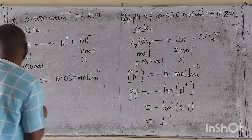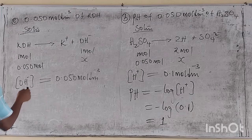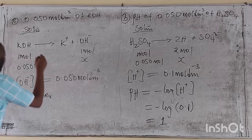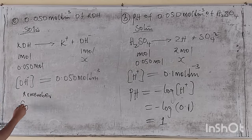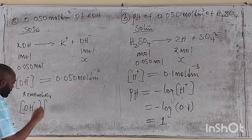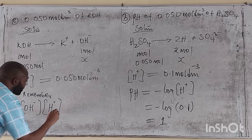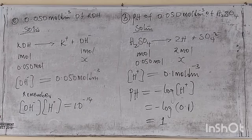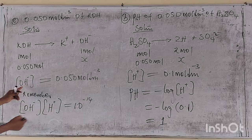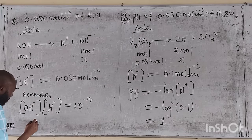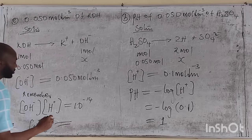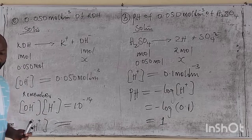So this is the hydroxide ion concentration. Now remember that the product of hydrogen ion concentration and hydroxide ion concentration is equal to 10 raised to minus 14. We have the hydroxide concentration, and we want to get the hydrogen ion concentration to find the pH.